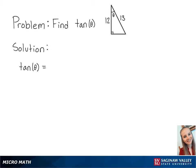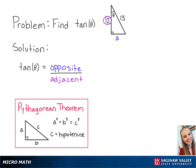For this problem, we're going to find tangent of theta of the following right triangle. Tangent of theta is equal to the opposite side length of the angle over the adjacent side length of the angle. Since we don't know the length of the opposite side, we're going to use the Pythagorean theorem to solve for A.